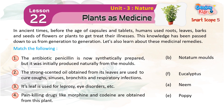3. Its leaf is used for leprosy, eye disorders, etc. 4. Pain-killing drugs like morphine and codeine are obtained from this plant. Answer: Poppy.